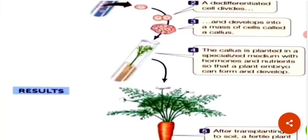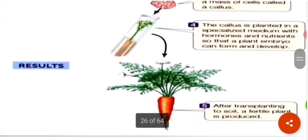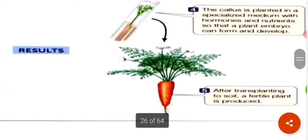The callus is planted in a specialized nutrient medium. We provide specialized hormones — the ratio of auxin to cytokinin. If you want root growth, you keep a higher auxin-to-cytokinin ratio. So a plant embryo can form and develop, and after that the whole plant will become a plantlet, and after transplanting to soil, a fertile plant will be produced.